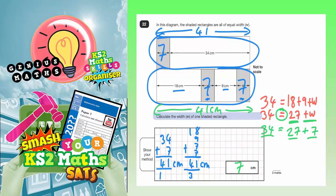That means that the mystery length of all the rectangles that have been labelled with a W must all be 7. They must all have a width of 7 centimeters.